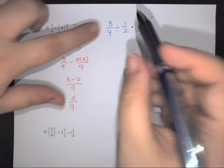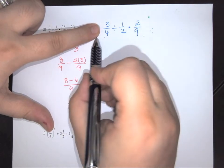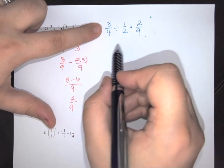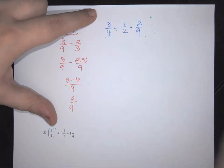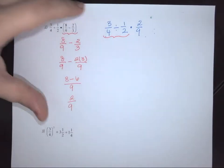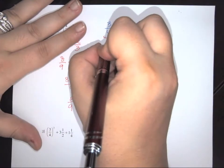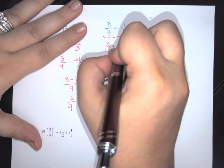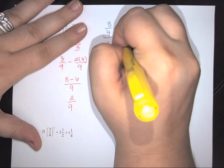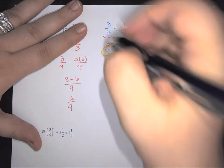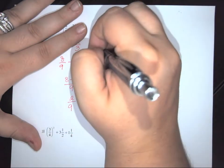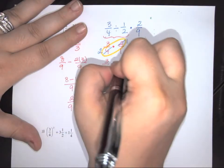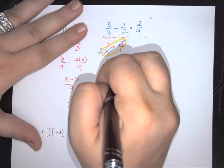I have to again start on the left-hand side. No more parentheses, no exponents, so I look at multiply and divide. Starting left to right, what comes first is 3/4 divided by 1/2. So this is going to be 3/4 — change to multiplication and flip the reciprocal: 2 over 1. I've got a cross-multiplication: 2 becomes 1 and 4 becomes 2. So this is 3 over 2 times 1, which leaves me with 3 halves.